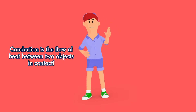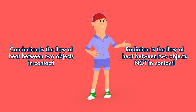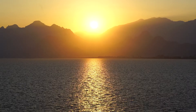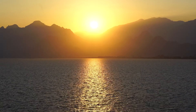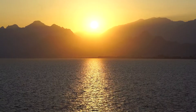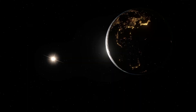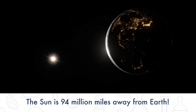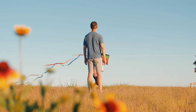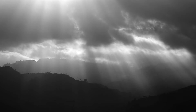While conduction is the flow of heat between two objects in contact, radiation is the flow of heat between objects that are not in contact with each other — like the sun! Radiation takes the energy from the sun and transfers the heat to us through heat waves. The sun is so strong that even from 94 million miles away, we can feel its energy on our skin on a hot and sunny day. Can you imagine how far away that is?